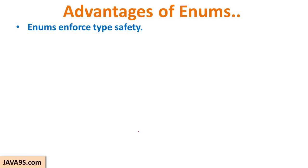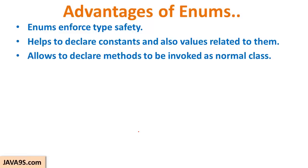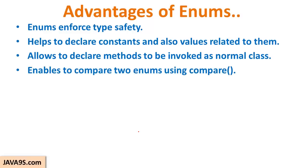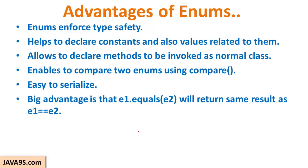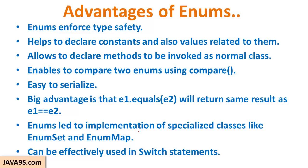The advantages of enum: enums enforce type safety. These are things to remember for interview purposes. Enums help in declaring constants and also values related to them. They allow declaring methods and being invoked like a normal class. Enums enable comparing two enums using compareTo and they are easy to serialize. You can use the equals method or the == operator to compare two enumerations. Enum led to implementation of specialized classes like EnumSet and EnumMap, and enums can be effectively used in switch statements.